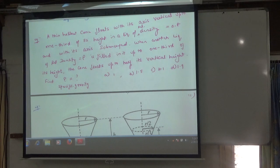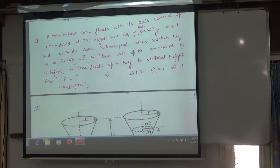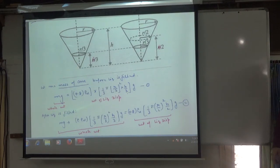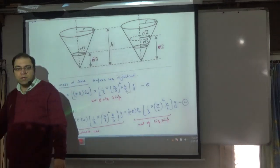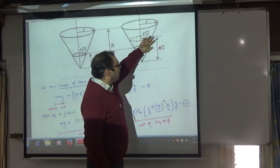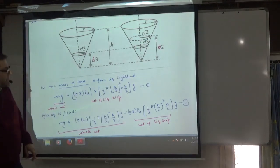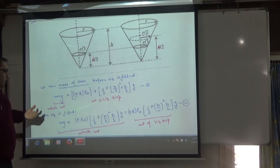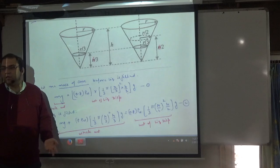When another liquid of relative density ρ is filled inside the cone, the cone now floats with half its vertical height submerged — first it was one third, now it is half. The floating principle is simple: the mass of the cone is M before liquid is filled. Weight of liquid displaced must equal the whole weight of the body — that is the floating principle.